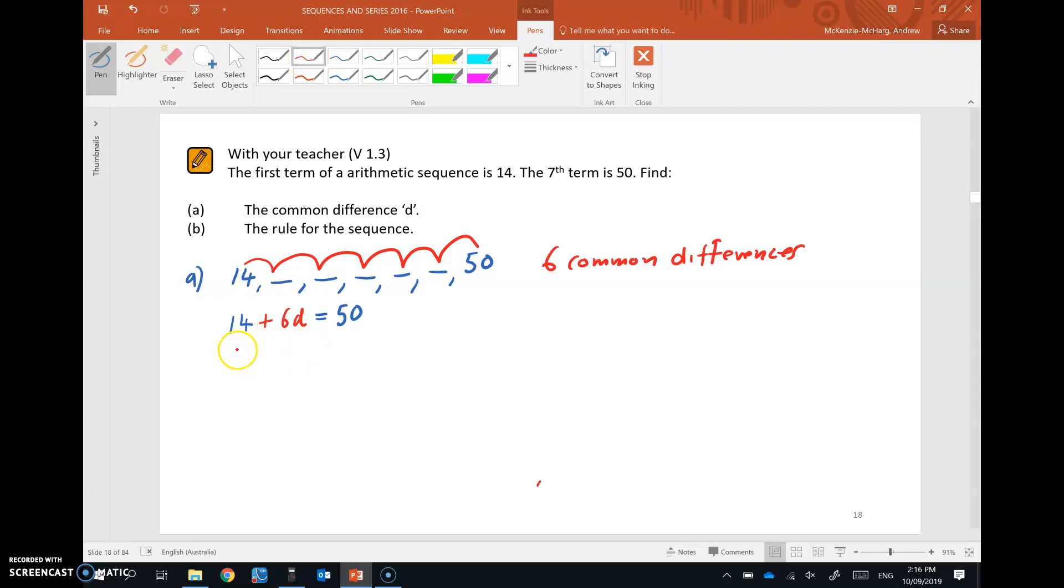Okay, so to get D on its own, we're going to have 50, and we subtract 14, and then we divide by the 6. So that gives us 36 on 6. That's a common difference of 6.